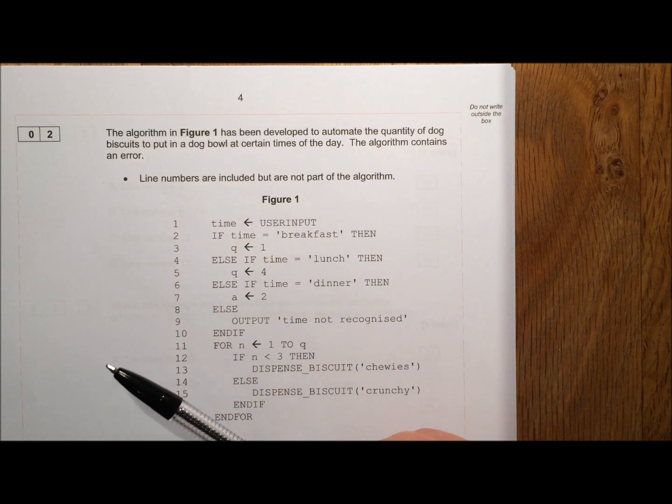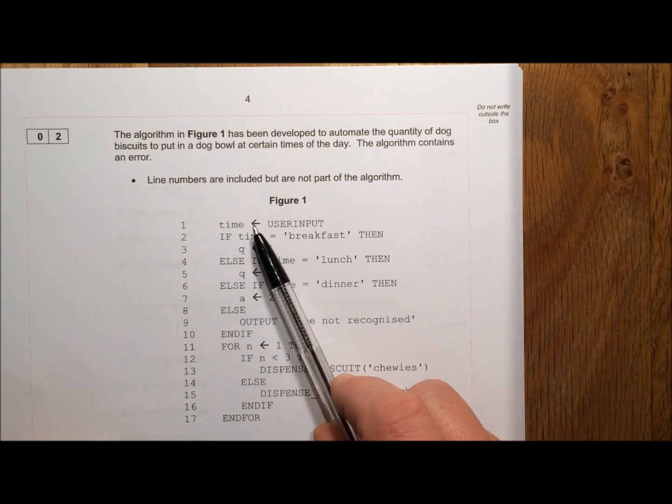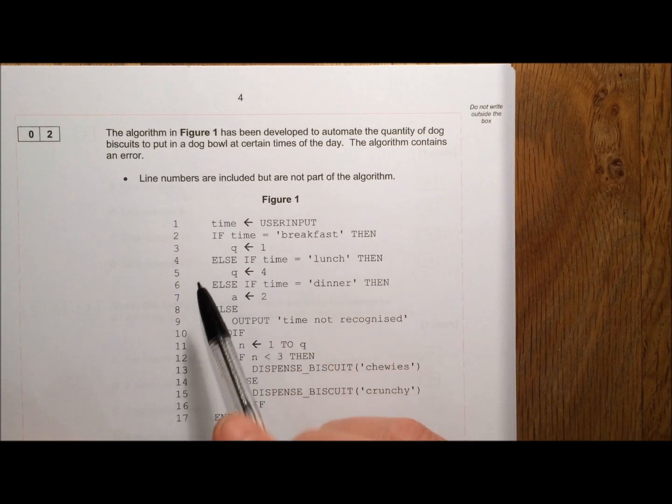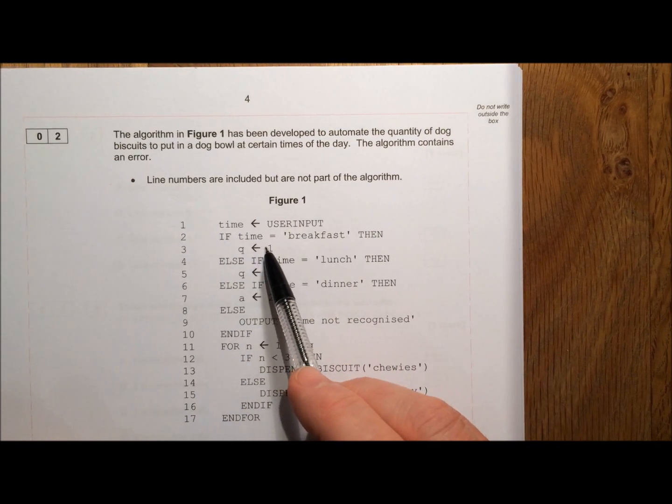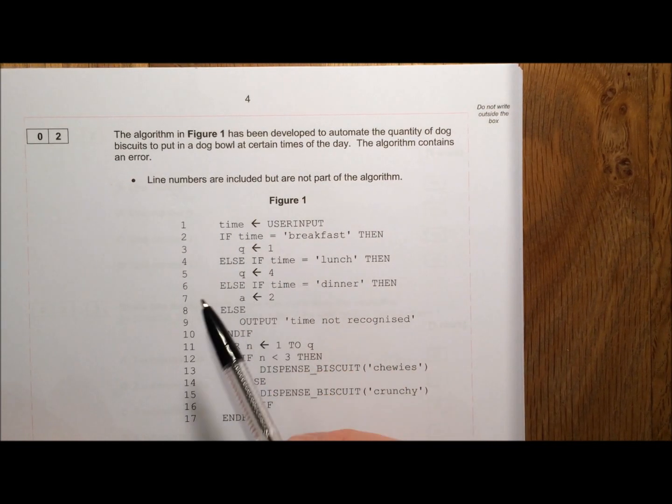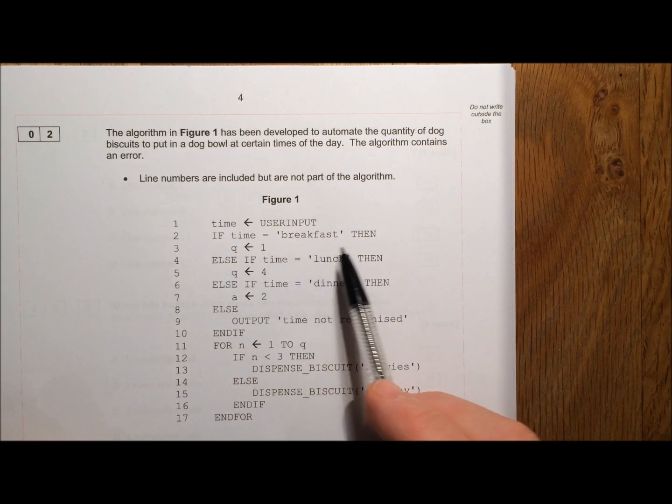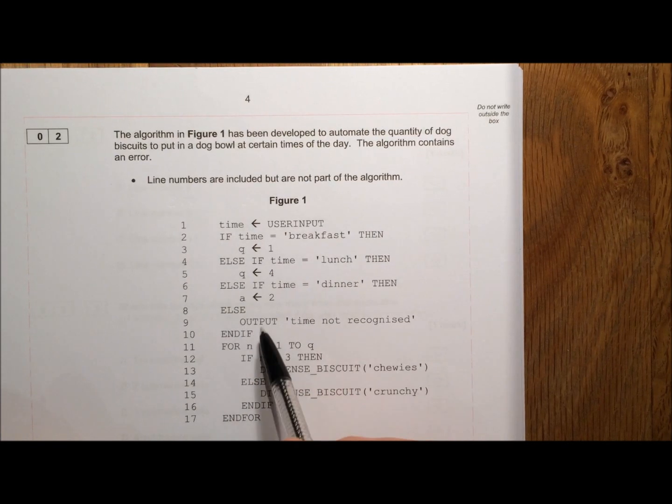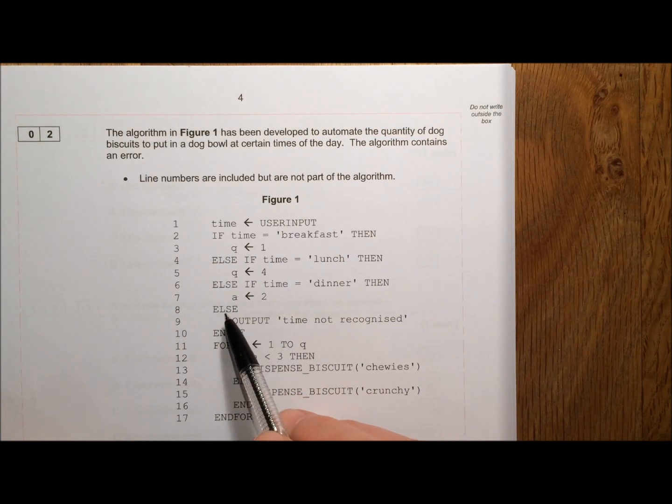So we're obviously going to have to find that error at some point. Let's have a look at what the algorithm is doing. User input is assigned to time. If time equals breakfast, then we set Q to be 1. Otherwise, else if time equals lunch, then we set Q to be 4. Otherwise, else if time equals dinner, then we set A to be 2. That's curious.